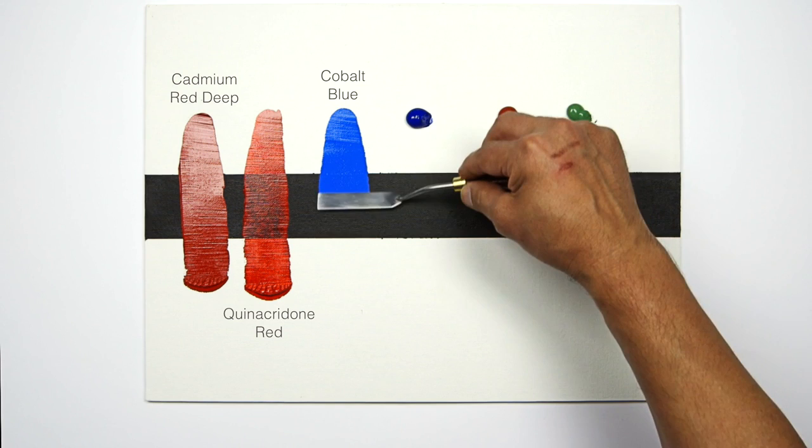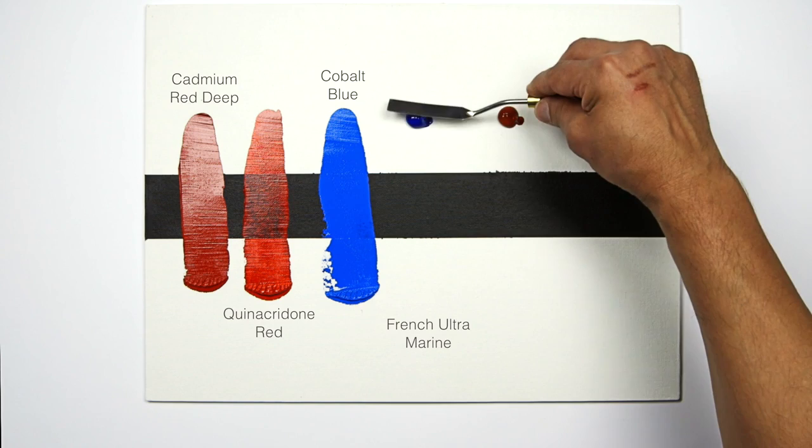You can see the same happening with this Cobalt Blue. This is a very opaque color whilst French Ultramarine allows the black line underneath to come through.